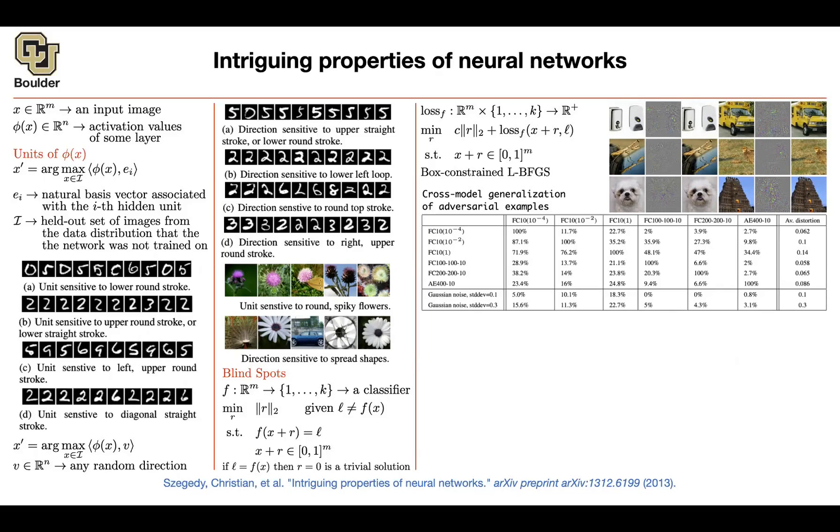And that perturbation not only is going to mess up with the network that you have access to, but across models, with a high probability the same perturbations are going to confuse other networks. And this means that there is a cross-model generality to these adversarial examples.